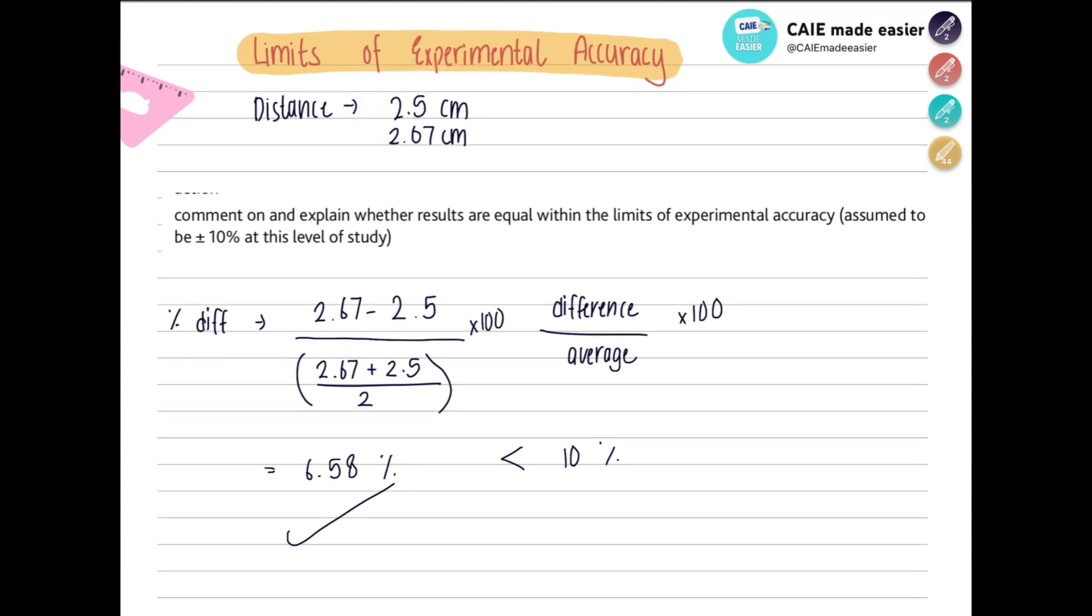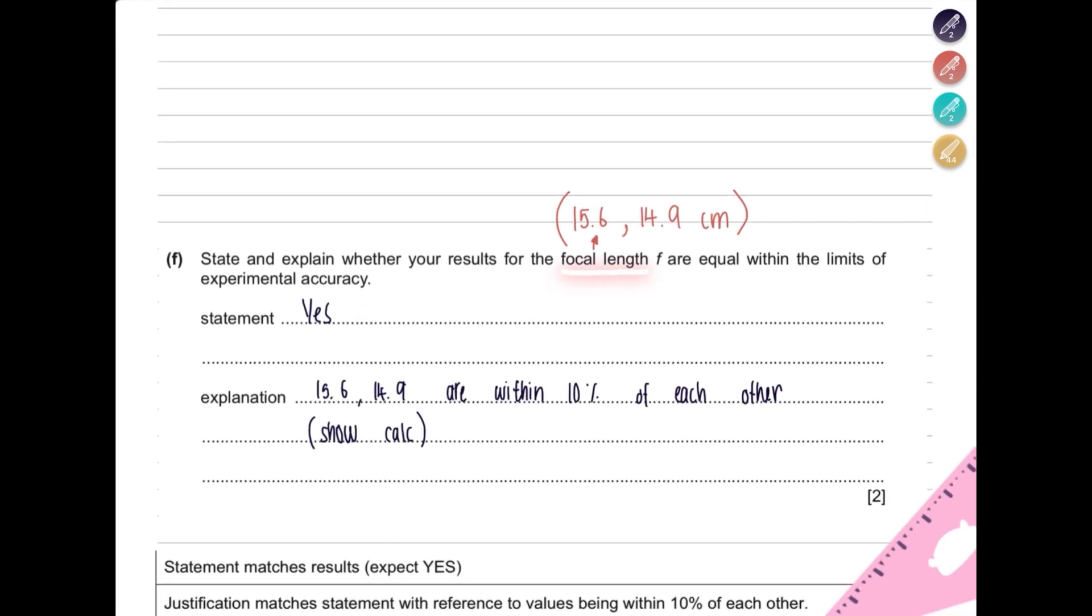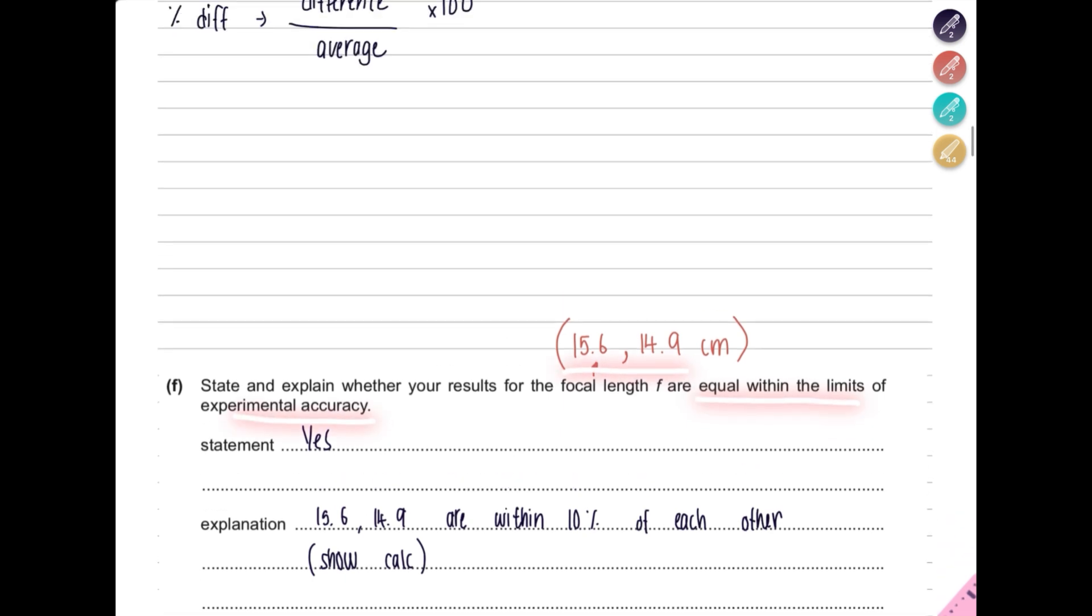Let's look at an example from the past paper. So here you had an experiment where you calculated the focal length f. So 15.6 and 14.9 were your two values. You have to say whether or not are they equal within the limits of experimental accuracy. So let's see what we're getting.